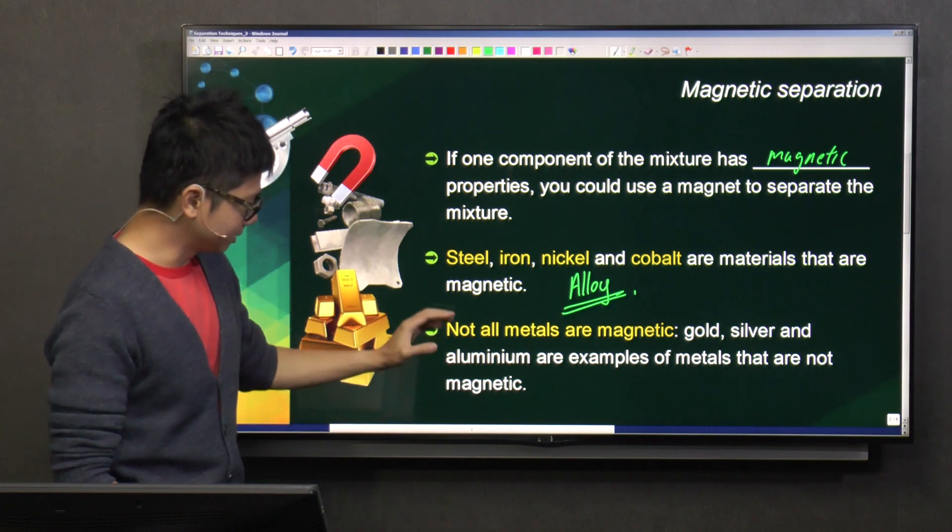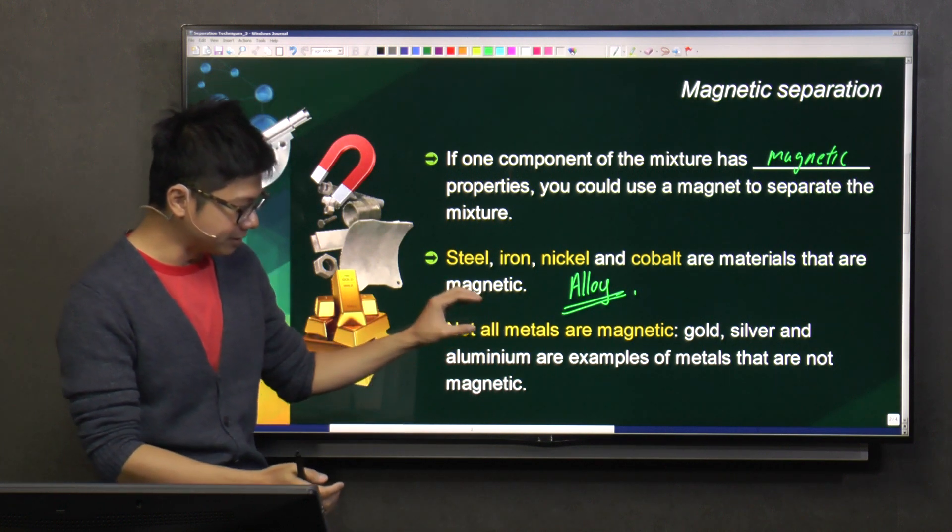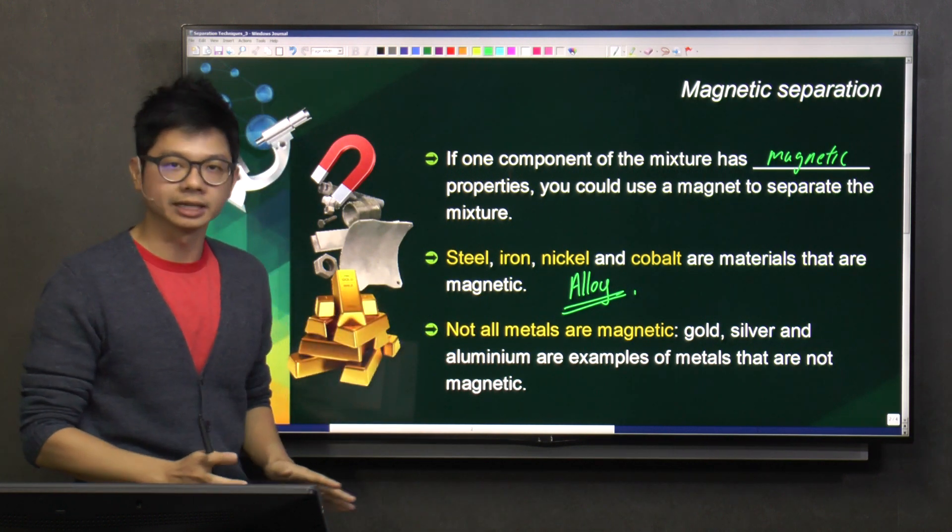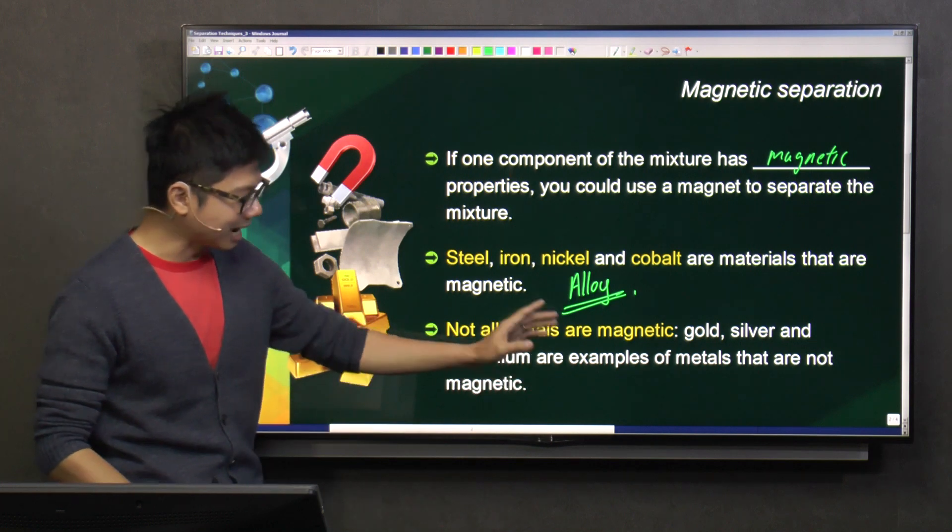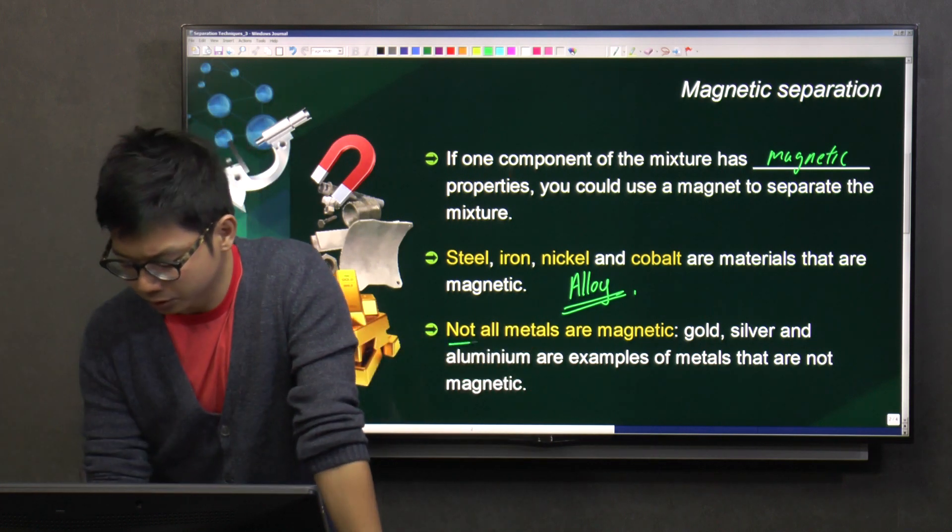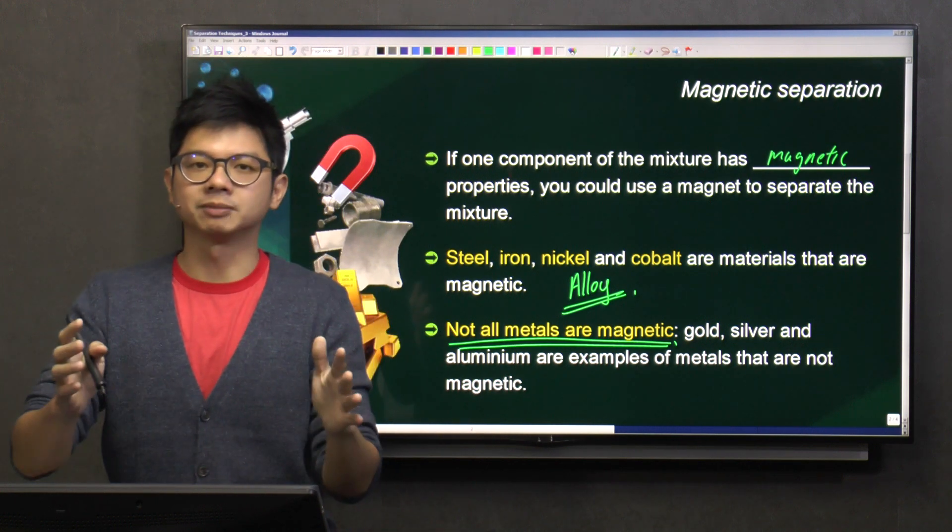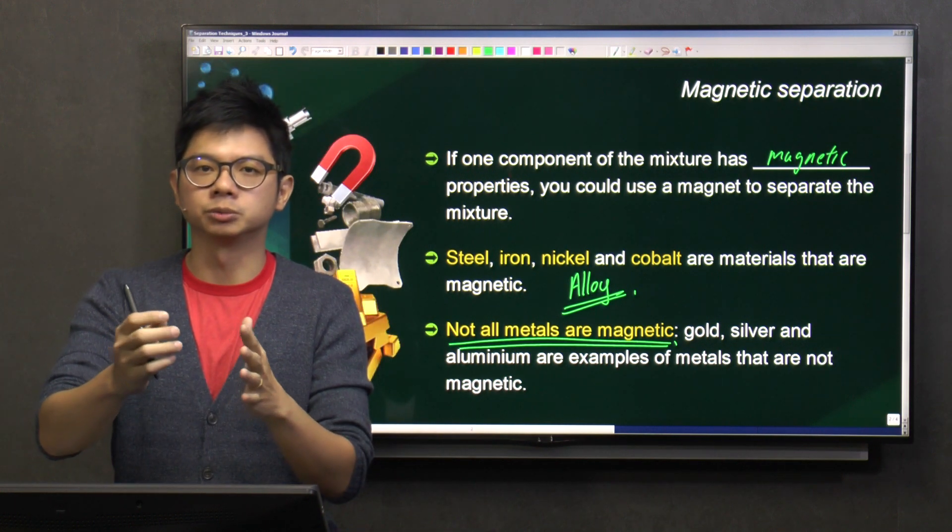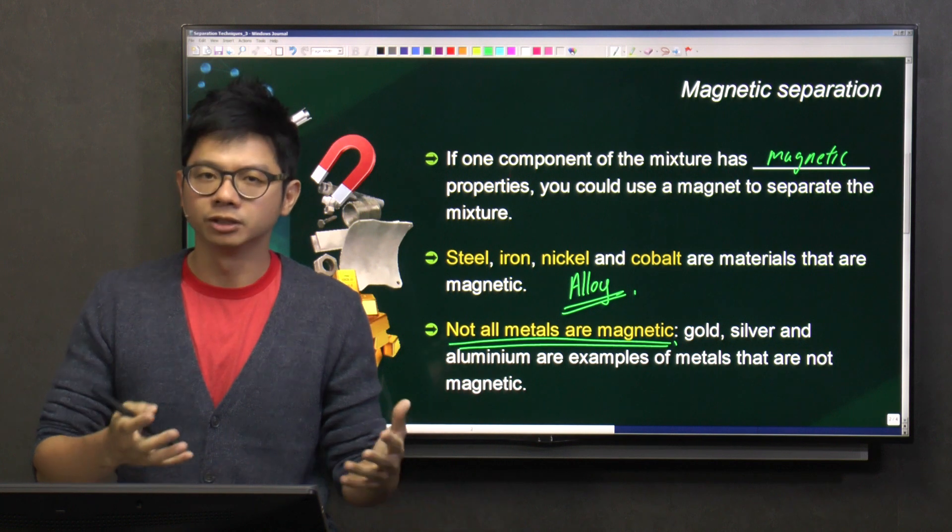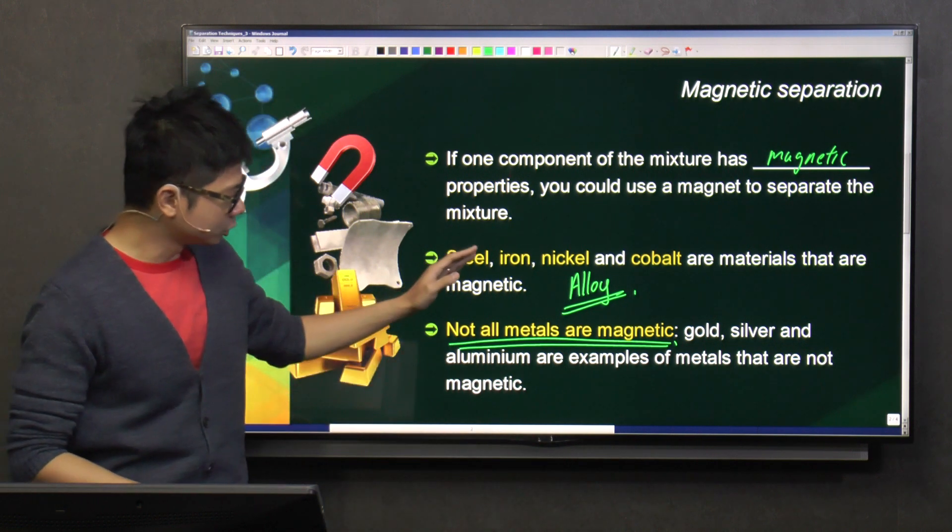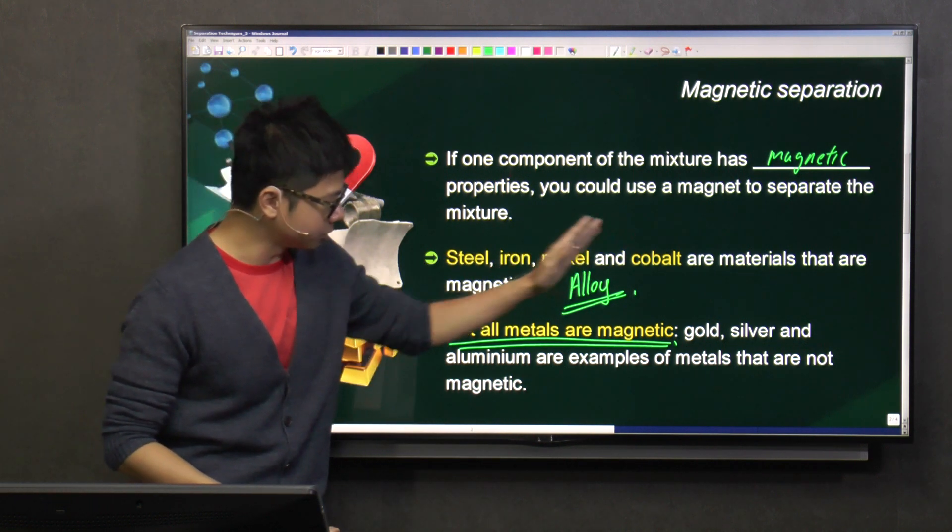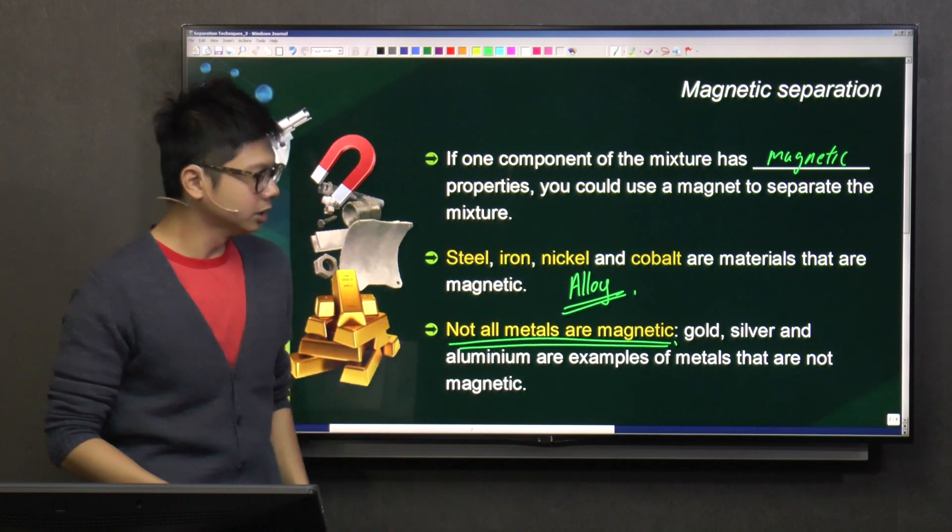And another misconception I want to address. Not all metals are magnetic. So some students have this misconception, they thought that all metals must be able to be attracted to a magnet. No, only these four. Superman is not cute. Steel, iron, nickel, cobalt.